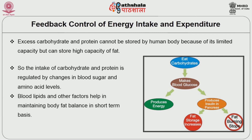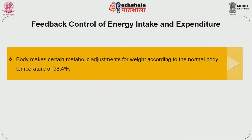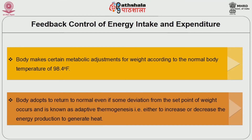The intake of carbohydrate and protein is regulated by changes in blood sugar and amino acid levels. Blood limits and other factors help in maintaining body fat balance on a short-term basis. The body makes certain metabolic adjustments for weight according to the normal body temperature of 98.4 degrees Fahrenheit. The body adopts mechanisms to return to normal even if some deviation from the set point of weight occurs, known as adaptive thermogenesis — that is, either to increase or decrease energy production to generate heat.